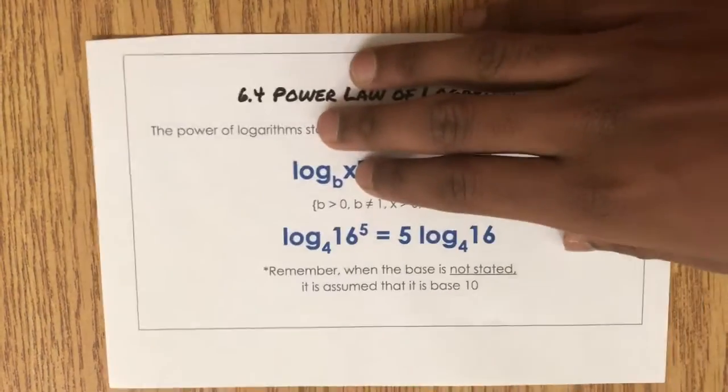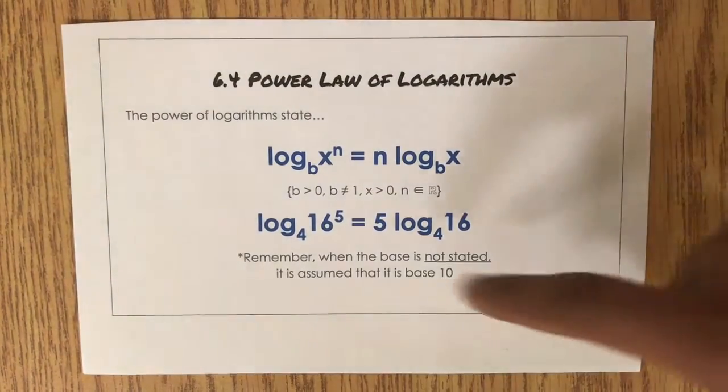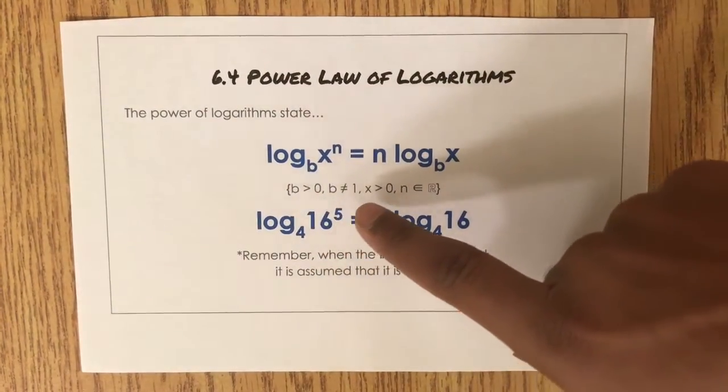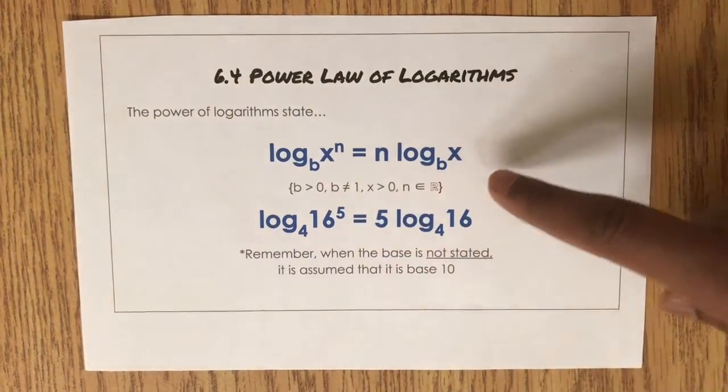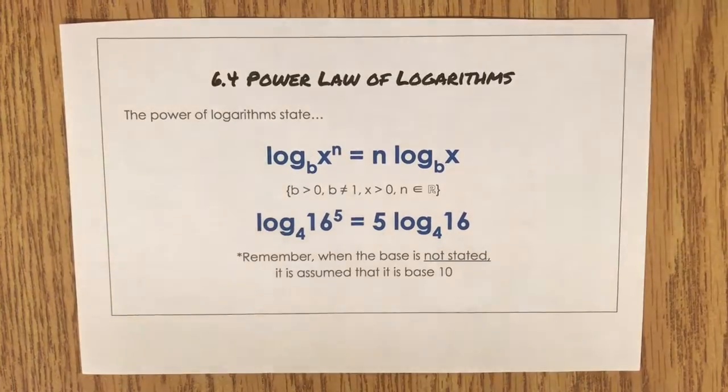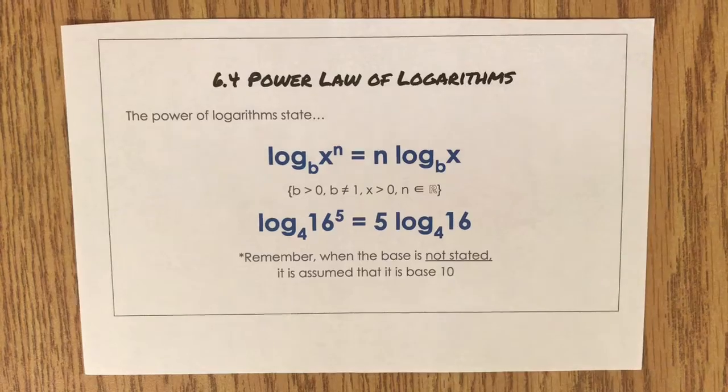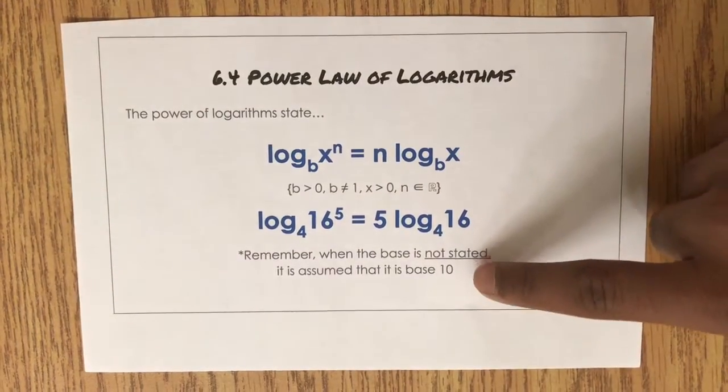Section 6.4 covers the power law of logarithms, which states that log base b of x to the power of n equals n log base b of x. For example, log base 4 of 16 to the 5 equals 5 log base 4 of 16. But remember, when the base is not stated, it is assumed that it is base 10.